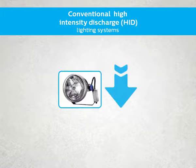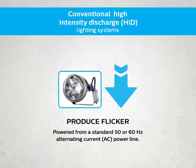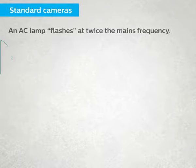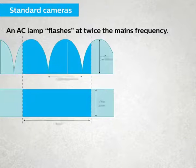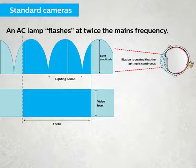Nearly all conventional high-intensity discharge lighting systems can produce flicker as a result of the light source being powered from a standard 50 or 60 Hz alternating current power line. An alternating current, or AC, lamp flashes at twice the mains frequency. Due to the speed of the flashes, they are imperceptible to the human eye, and the illusion is created that the lighting is continuous.